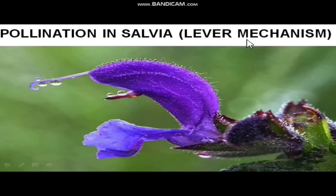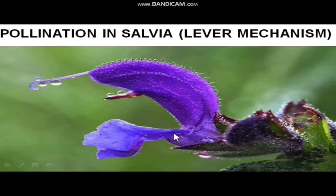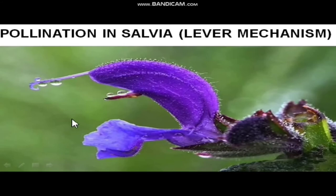The next example for entomophily is Salvia. The Salvia flower exhibits a lever mechanism — at the bottom there is one corolla part and the top has another corolla part. When the insect comes and sits on the bottom landing site, the top region automatically bends down and deposits or collects pollen grains. Another unique feature of the Salvia flower is protandry — the androecium matures first, ahead of the gynoecium — so both essential organs are not matured at the same time.